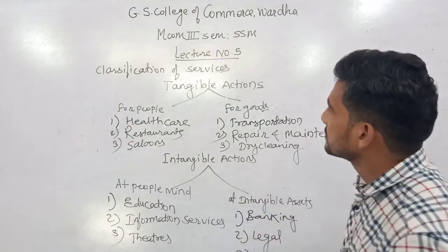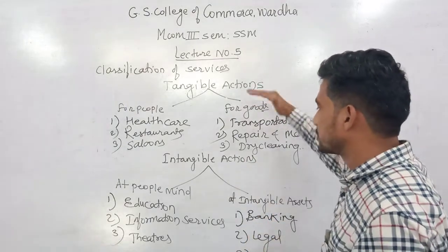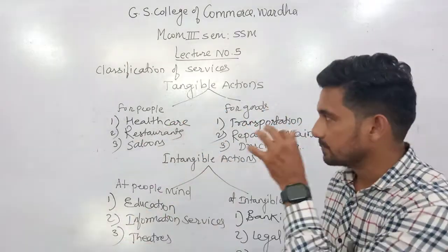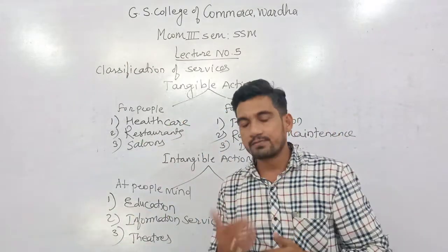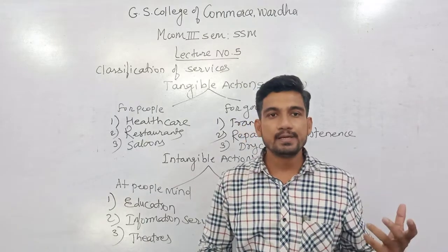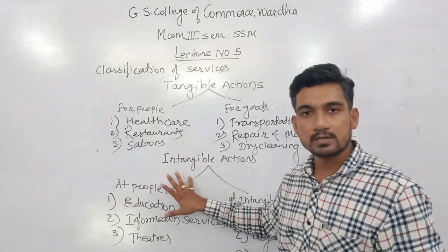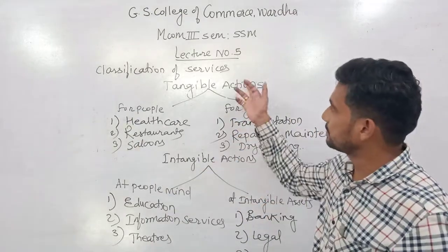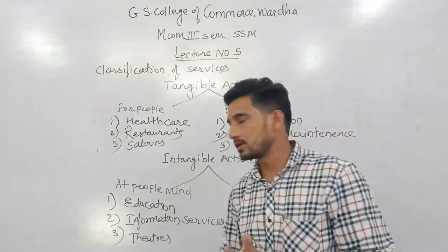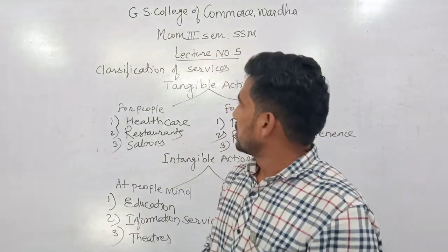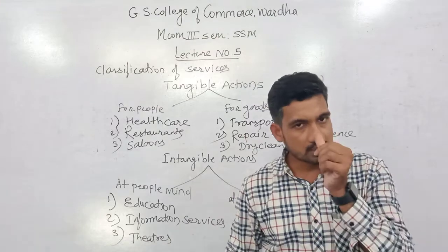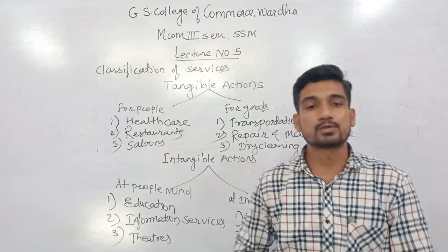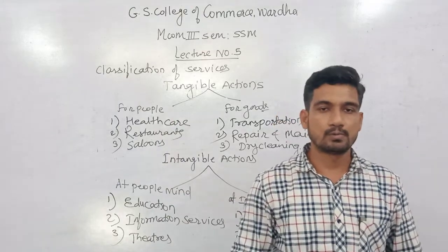So when we classify services on the basis of tangible actions and intangible actions, they can be related to people or related to goods. When services are processed with the help of the mind, they can be intangible actions, and when related to goods or intangible assets, they fall under tangible or intangible actions respectively. This is everything about the classification of services. In the next lecture we will see the next point. Till then, goodbye, thank you.